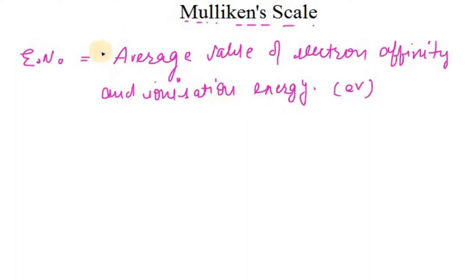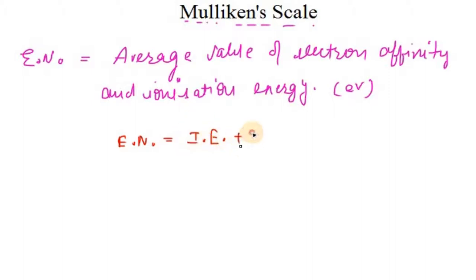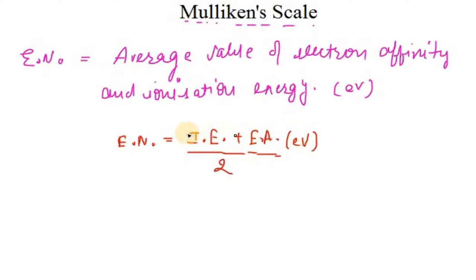So how do we define electronegativity on the Mulliken scale? Electronegativity is defined as the ionization energy plus electron affinity, when both values are taken in electron volts, and then their average is taken. That's how we define the value of electronegativity according to the Mulliken scale.